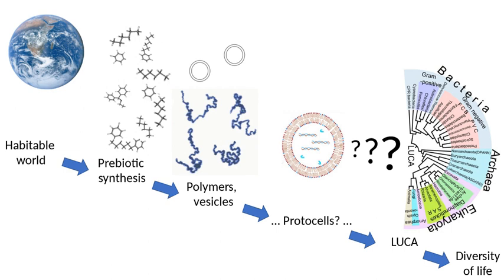Extraterrestrial Organic Molecules. Another idea is that amino acids, which were formed extraterrestrially, arrived on Earth via comets. In 2009, it was announced by NASA that scientists had identified one of the fundamental chemical building blocks of life in a comet for the first time. Glycine, an amino acid, was detected in the material ejected from Comet Wild 2 in 2004 and collected by NASA's Stardust probe. Tiny grains, just a few thousandths of a millimeter in size, were collected from the comet and returned to Earth in 2006 in a sealed capsule and distributed among the world's leading astrobiology labs.